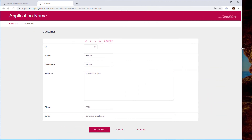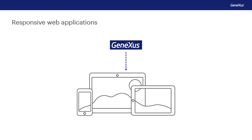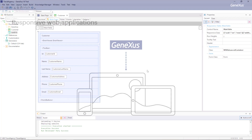GeneXus generates responsive web applications, or sensitive applications, which offer optimum viewing, good navigation, and excellent use of screen space. This is achieved with design features that allow viewing all the information on the screen using the functions provided by GeneXus. These functions allow us to show different layouts depending on the screen size of the device. Now that we've seen everything that was automatically generated by GeneXus using the customer transaction we created, let's go back to the development environment.